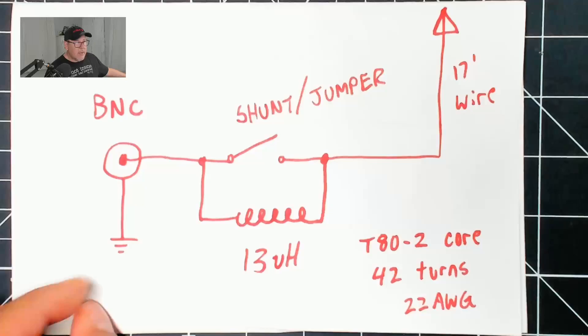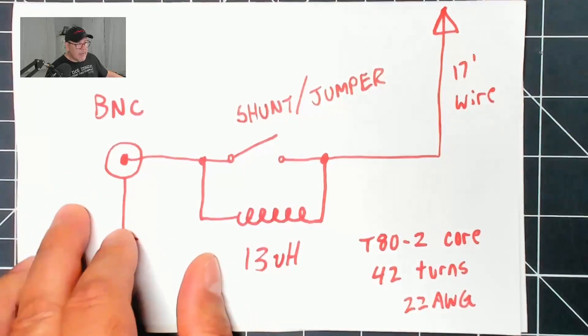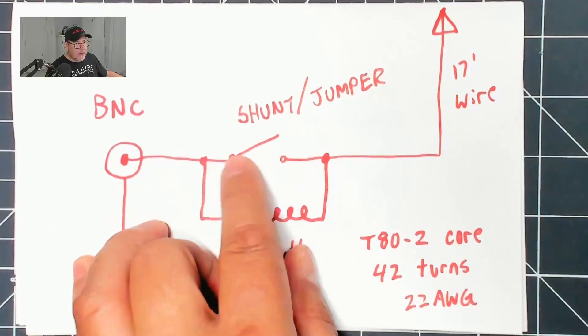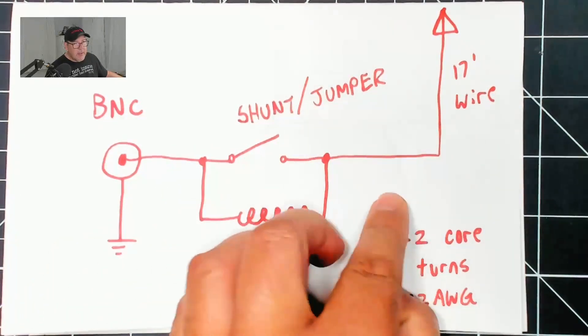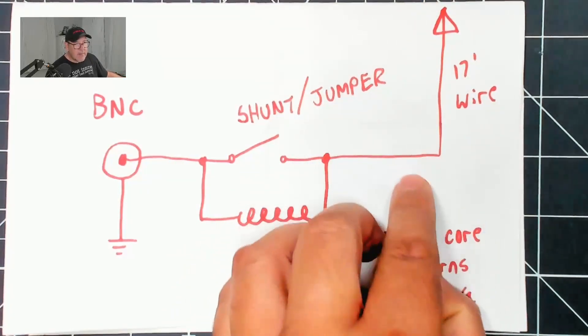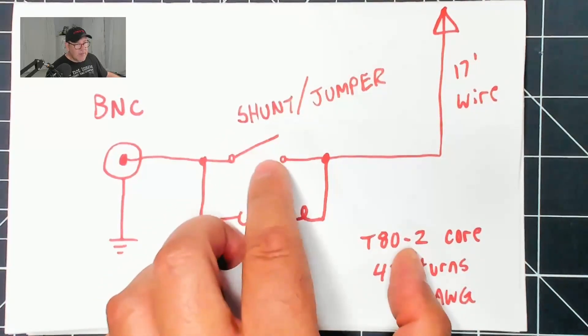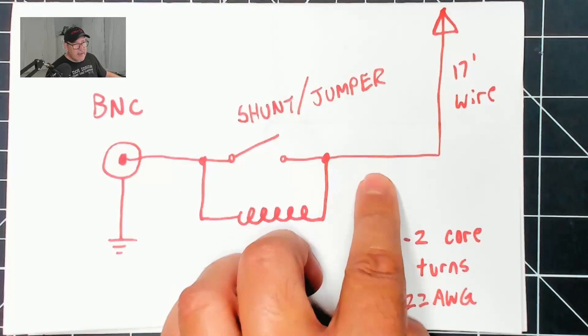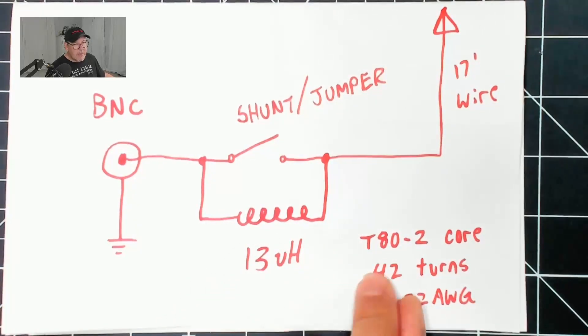I'll show you what we're talking about. So this is the input from the BNC connector. This is also the ground wing nut for connecting the ground radials. You can see the shunt or jumper just basically shorts out the coil and becomes a straight line up to the antenna, which is by default set up for 20 meter. So when you remove the shunt, this coil comes into play and gives you the correct inductance for making it resonant on the 40 meter band. The core is a T80-2, about 42 turns of 22 gauge mag wire.